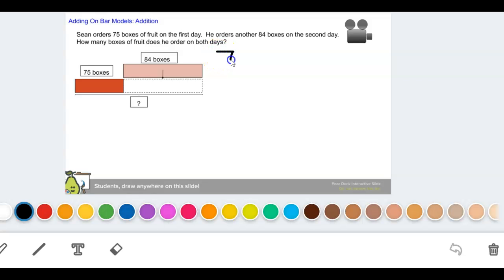We can do it this way: 75 plus 84. 5 plus 4 is 9. 8 plus 7 is 15.